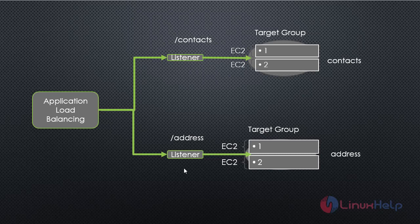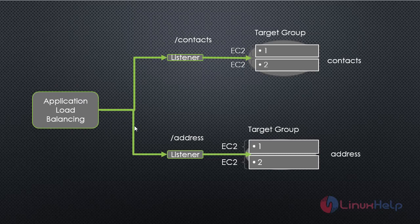When we set up an ALB, we configure listeners and target groups. Target groups contain a grouping of EC2 instances running specific microservices — like contacts and addresses. We have two target groups: one for contacts and one for addresses. Two listeners help in routing traffic and decide which path the traffic should follow. If the ALB receives traffic with the path '/contacts', it forwards to the contacts target group; if the path is '/address', it forwards to the address target group.